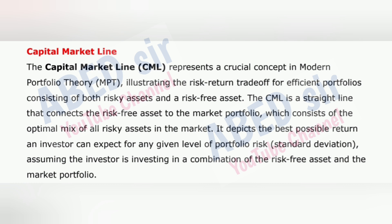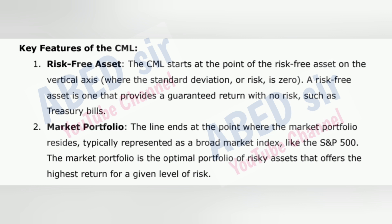The next important long question is the capital market line. The capital market line, CML, represents a crucial concept in modern portfolio theory, MPT, illustrating the risk-return trade-off for efficient portfolios consisting of both risky assets and a risk-free asset. The CML is a straight line that connects the risk-free asset to the market portfolio, which consists of the optimal mix of all risky assets in the market. It depicts the best possible return an investor can expect for any given level of portfolio risk (standard deviation), assuming investment in a combination of the risk-free asset and the market portfolio.